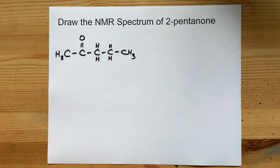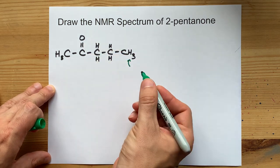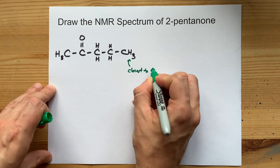Now here are the things that I want to make sure you understand. The hydrogens that are farthest away from the electronegative atom are going to be the ones that are closest to 0 ppm.